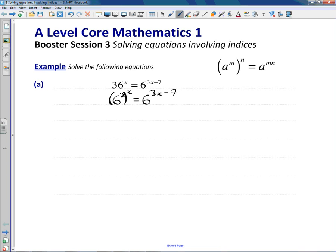And then we should be able to just compare our powers at the end. That's what we're aiming for, and we're going to use this rule now just to help us tidy up here. So using the rule, we can rewrite this as just 6 to the 2x.